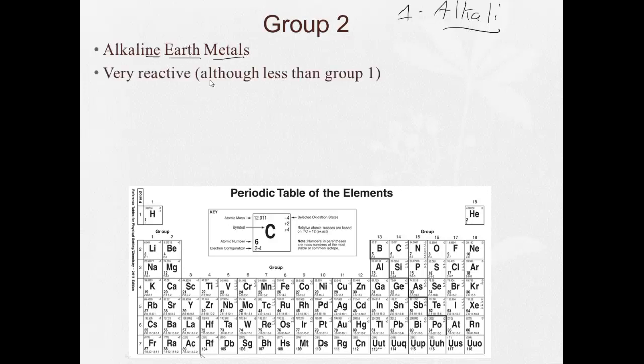Now they're a little bit less reactive than group 1, but they're still very reactive. And they're going to have 2 valence electrons. And since they have just those 2 valence electrons, they're going to tend to form 2+ ions.